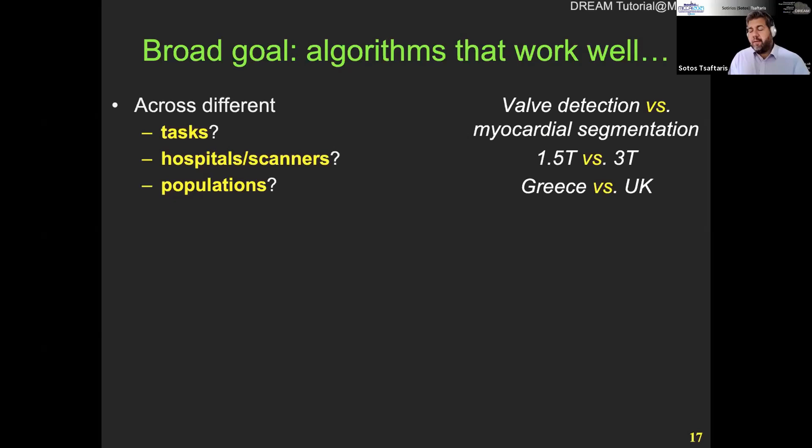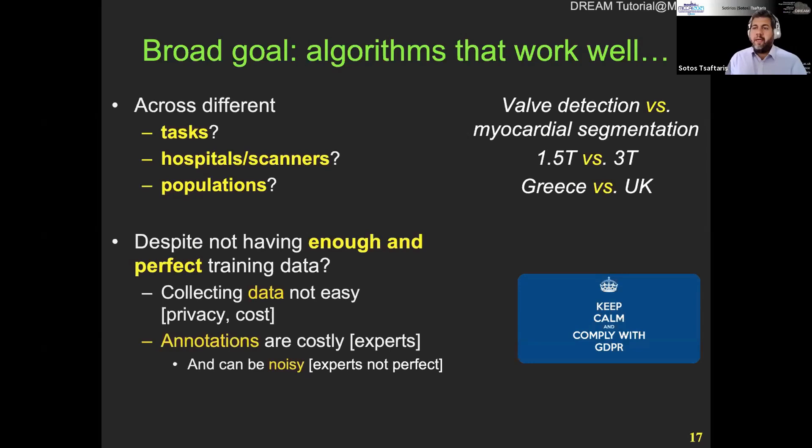Despite the fact that we don't have enough and perfect training data — collecting data is not easy. There are privacy and cost implications, annotations are costly because we have to rely on experts. And at the same time, our experts carry their own uncertainty — noise, varying levels of training, and different types of guidance on how they should annotate.